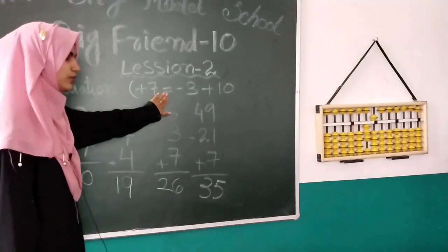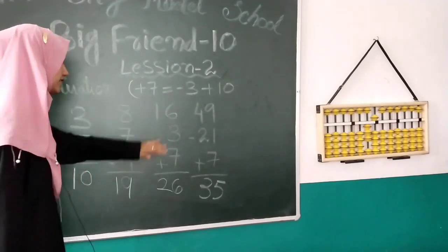So plus 7 kaise karte hai? Plus 7 is equal to minus 3 plus 10. That's it for today.